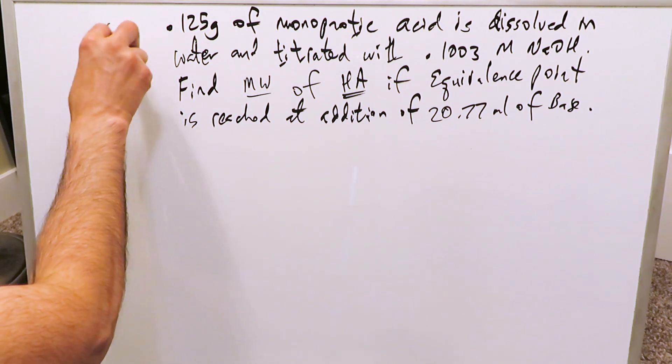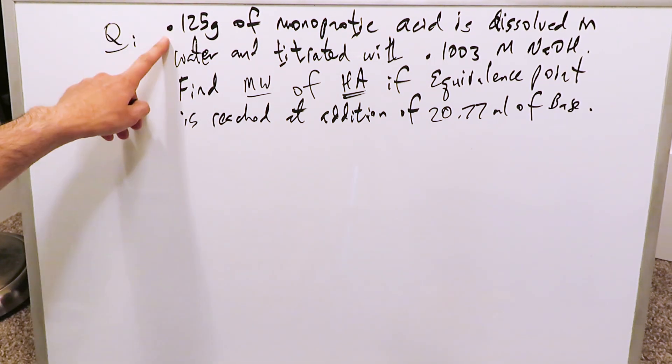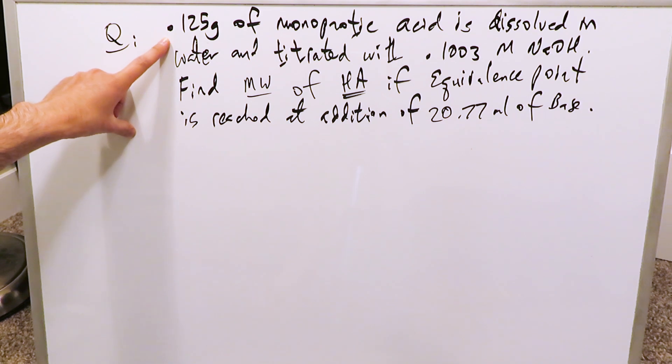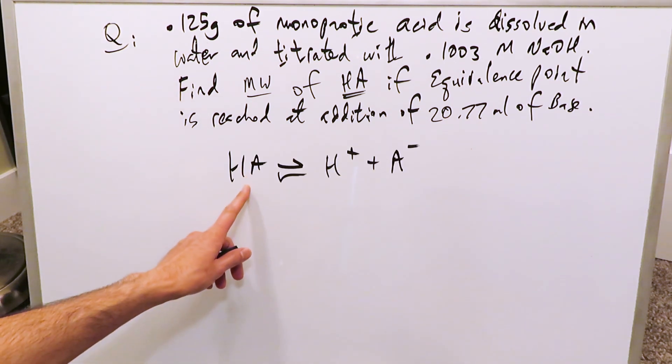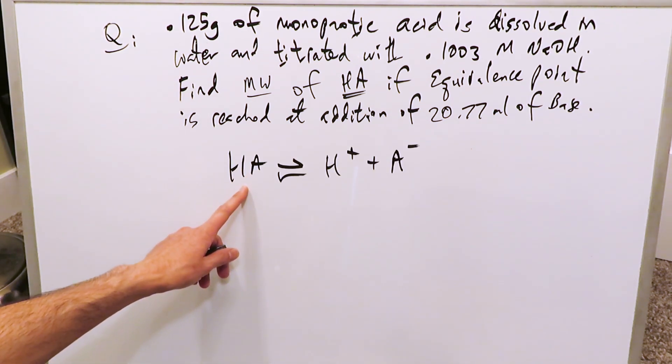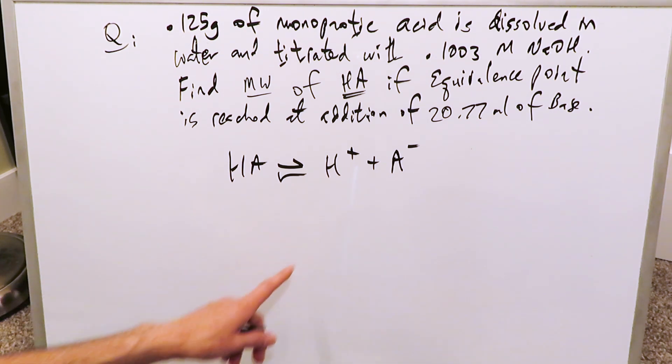A chemistry problem, acid-base question. As the question reads, you can see over here, I've written it out, 0.125 gram of monoprotic acid. A monoprotic acid is exactly like this. It has one ionizable hydrogen. If you were to dissolve this in water, it would dissociate. A single hydrogen would be generated.